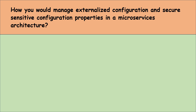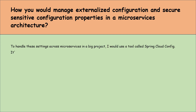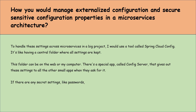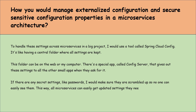Let's move to the next question: how would you manage externalized configuration and secure sensitive configuration properties in a microservices architecture? To handle settings across microservices, I would use Spring Cloud Config — it acts like a central repository where all settings are kept, either on the web or locally. A Config Server distributes these settings to all microservices when they request them. For any secret settings like passwords, I would ensure they are encrypted so no one can easily read them. This way all microservices can easily get the updated settings they need, and sensitive data stays secure.